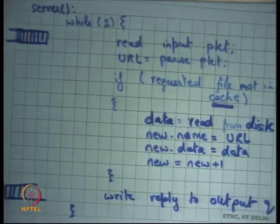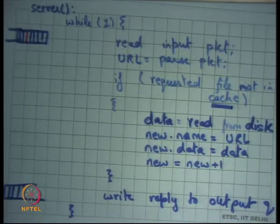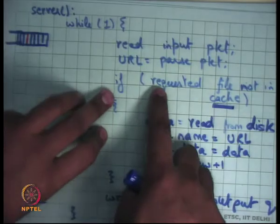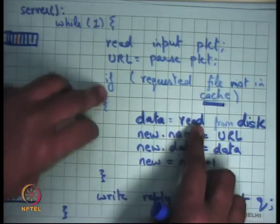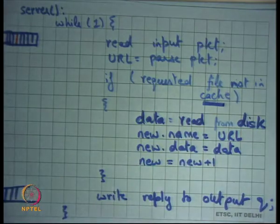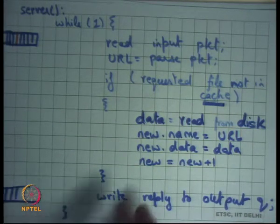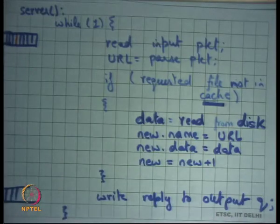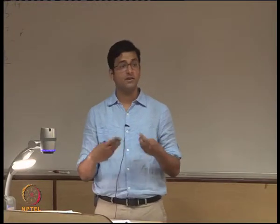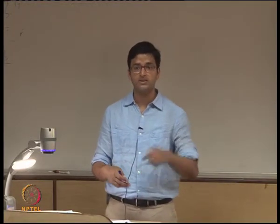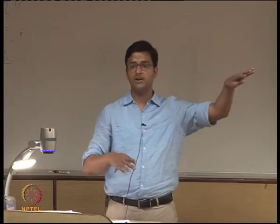The shared cache also creates problems. For example, two threads could both check and find the requested file is not in cache, creating duplicate entries. Worse, some interleavings could cause empty cache entries, or even a situation where you have the URL of one page paired with the content of another page.